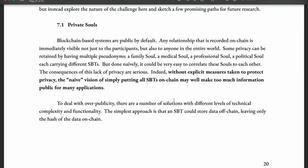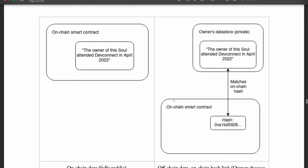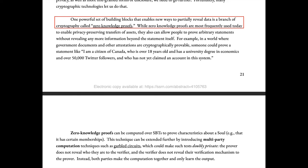One solution would be to store data off-chain, leaving only a hash of the data on-chain. Storing data off-chain lets people choose to reveal the contents of their SBTs only when they wish to. A better solution is to use zero-knowledge proofs — a branch of cryptography typically used to enable privacy-preserving transfer of assets. With zero-knowledge proofs, you can prove a statement without providing any additional information. Zero-knowledge proofs are a deep topic in themselves and we will create a separate video for it.